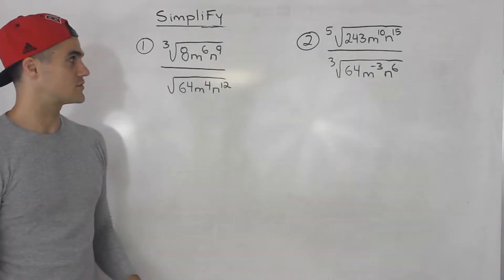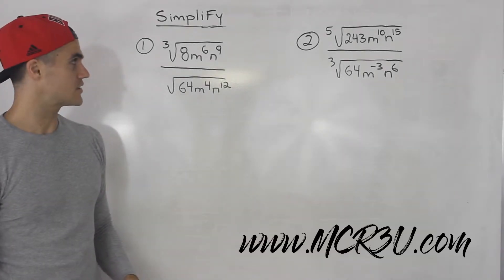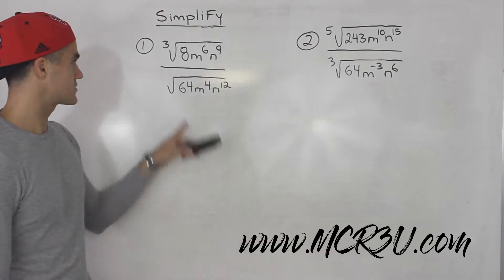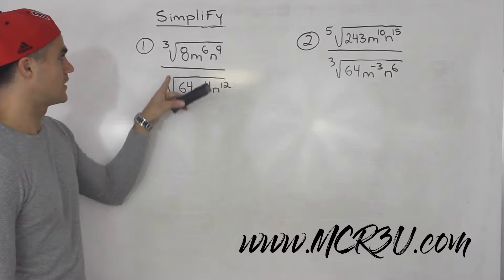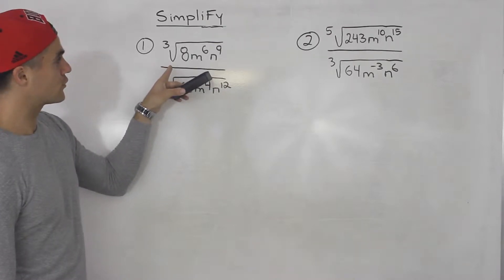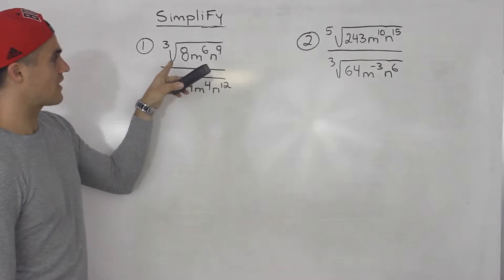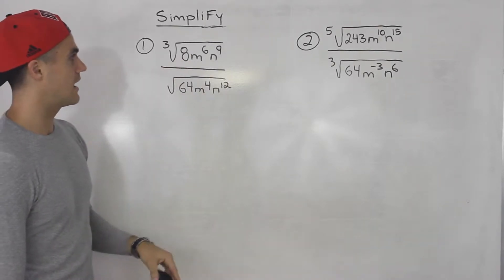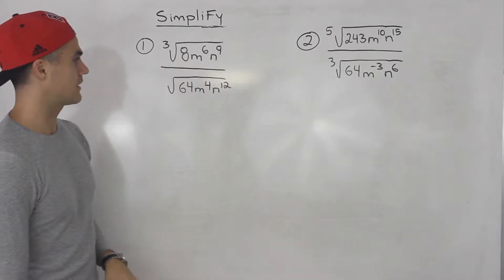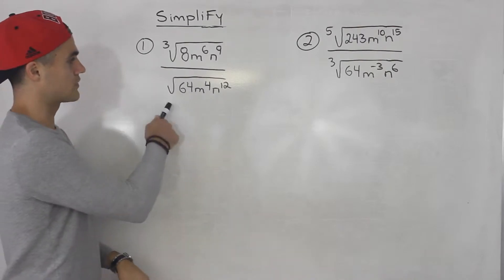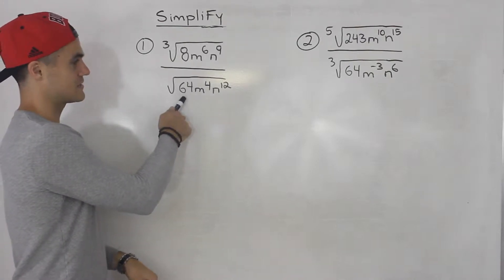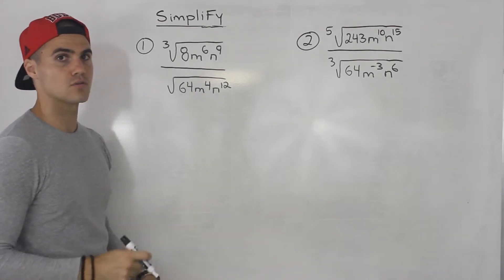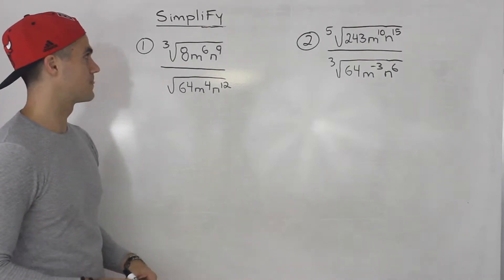Welcome back everyone. Moving on to more exponential expressions to simplify. Starting with number one, we've got the third root of 8m to the 6, n to the 9, over the square root of 64m to the 4, n to the 12th.